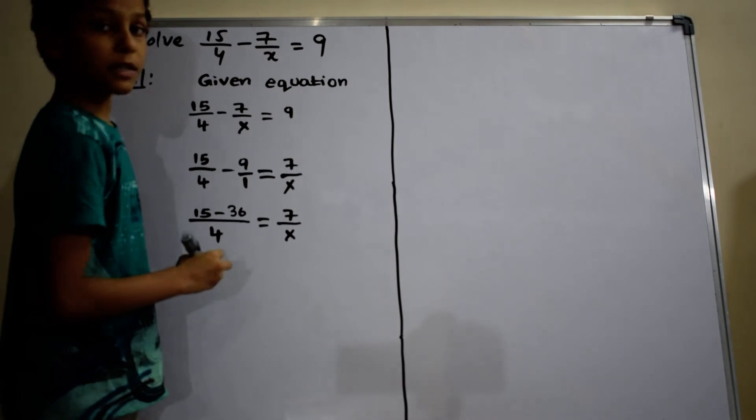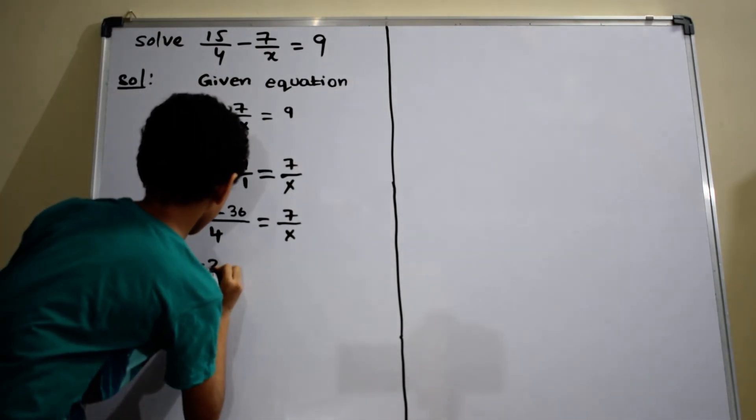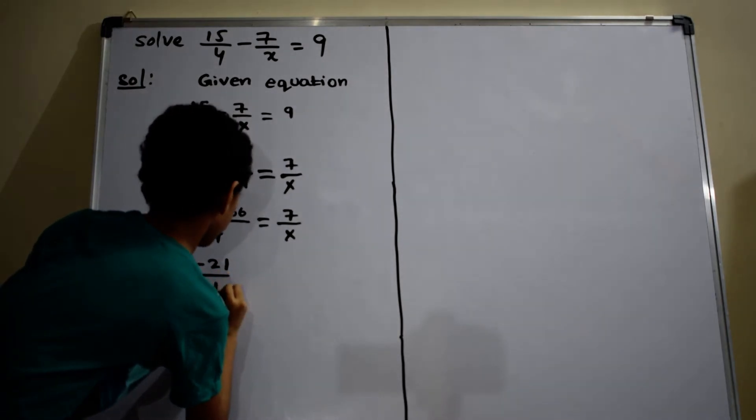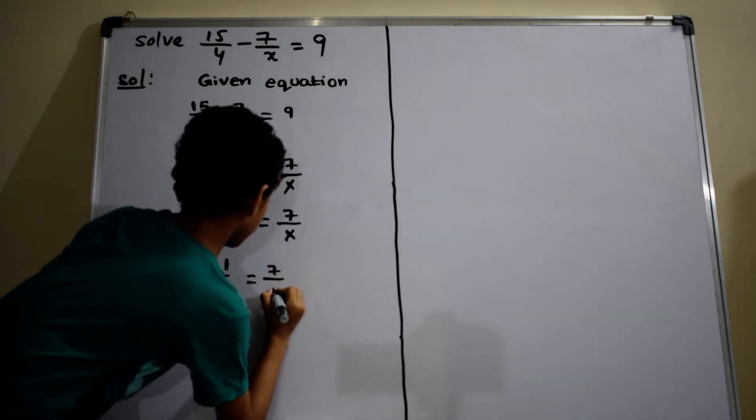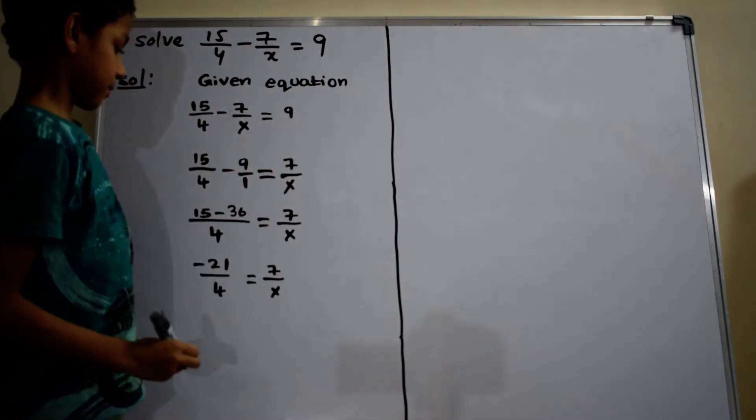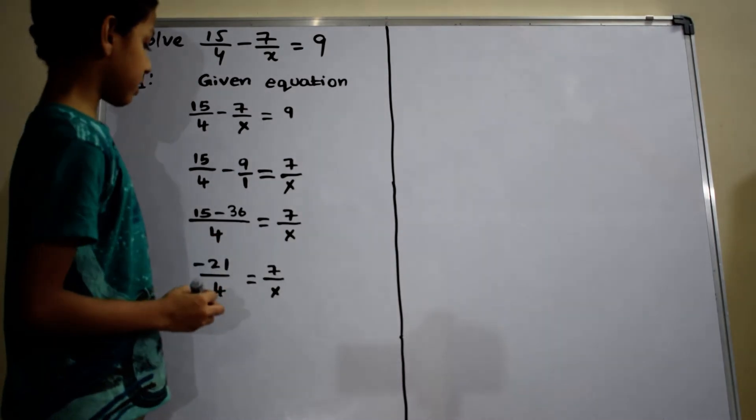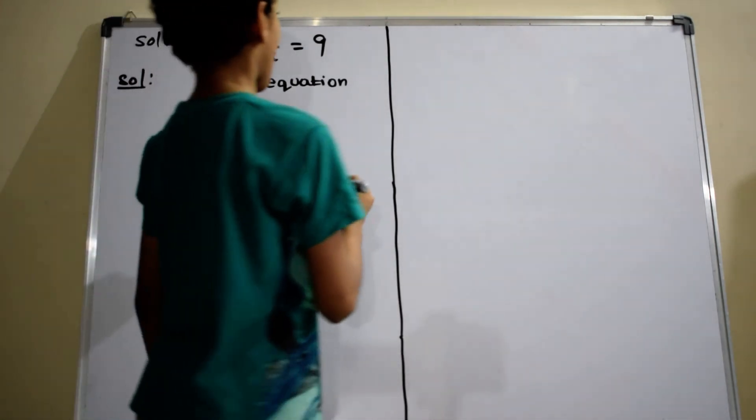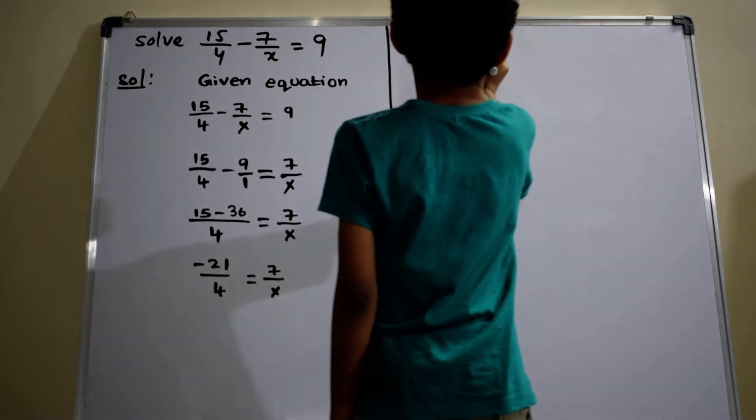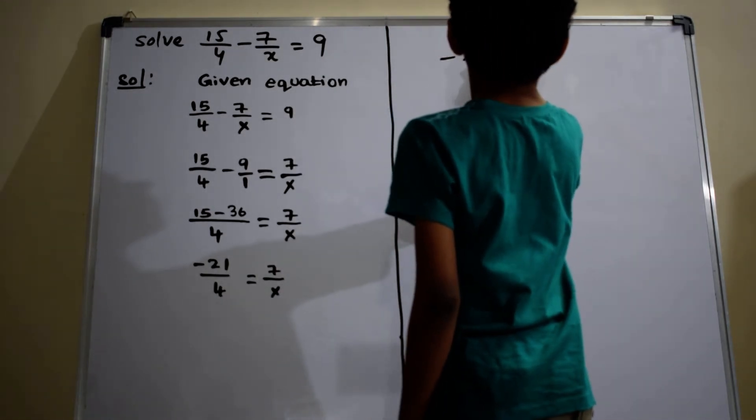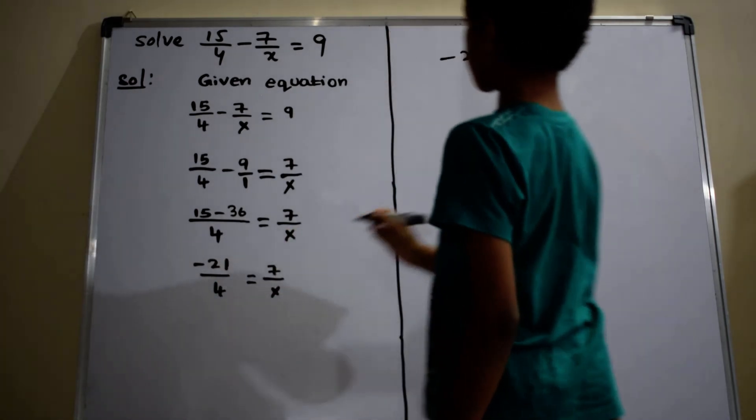Here, 15 minus 36 equals to minus 21 by 4 equals to 7 by x. Now I am cross-multiplying. Minus 21 into x equals to 7 into 4.